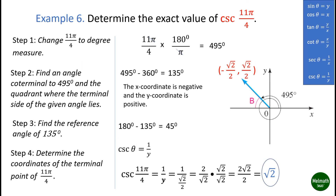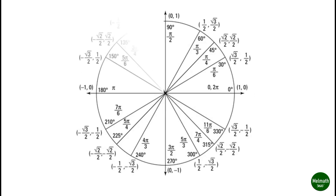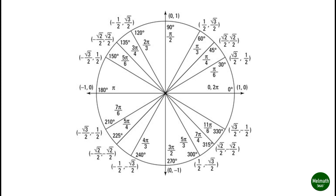In order to easily remember the coordinates of quadrantal angles as well as special angles, always consider the unit circle, which has a radius of one. The sign of the coordinates will depend on the quadrant where the terminal side of the given angle lies.